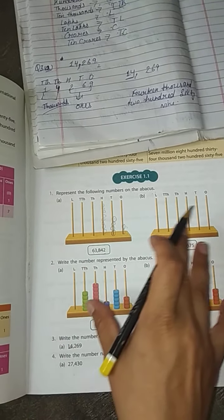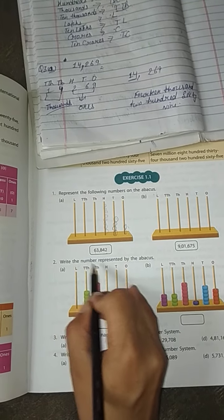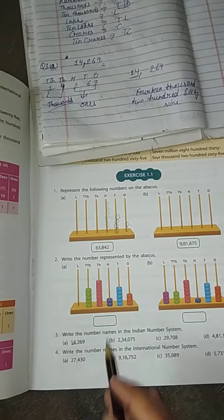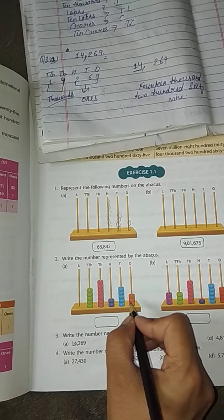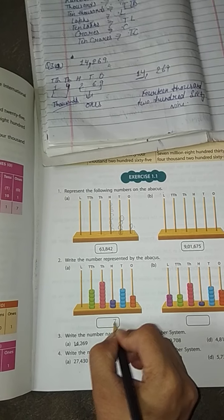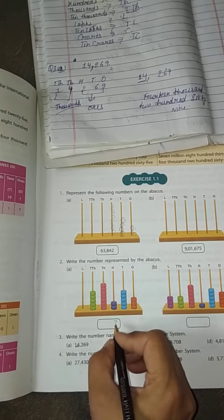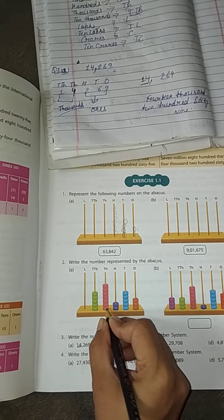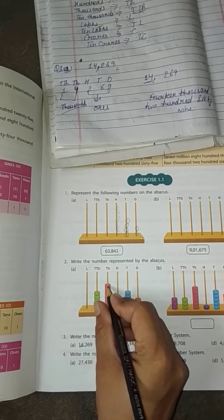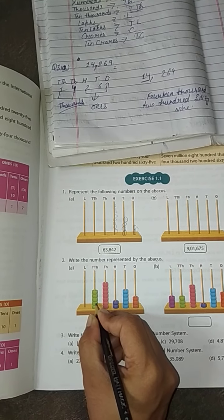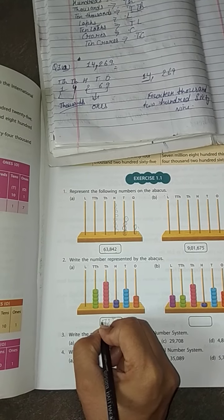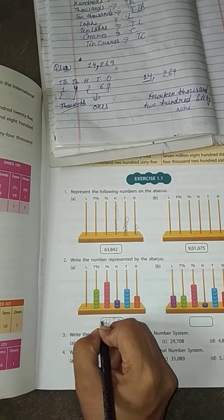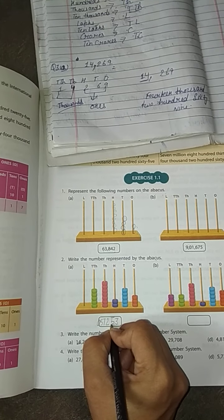So please try it. Second sum: write the number represented by the abacus. Ones, one two three. Tens, one two three. Hundreds, one two three four five. Thousands, one two. Ten thousands, one two three four five six seven. Lakhs, one two three four five.